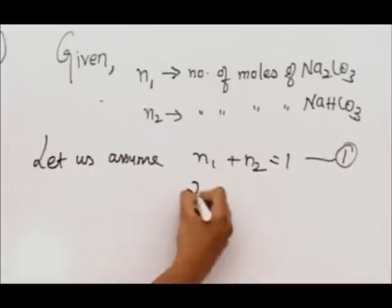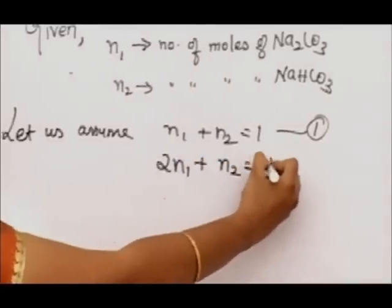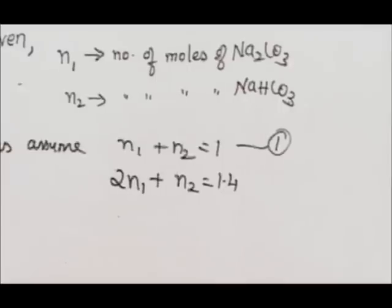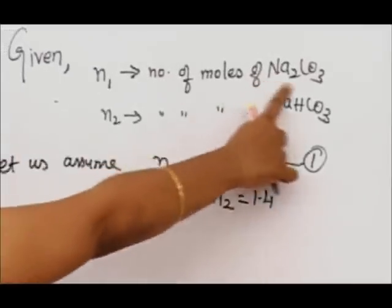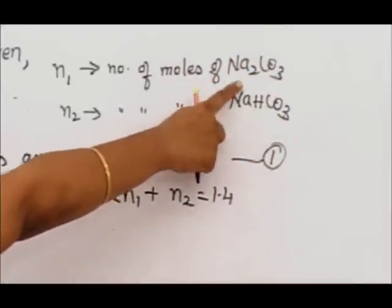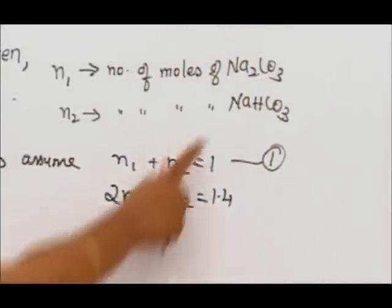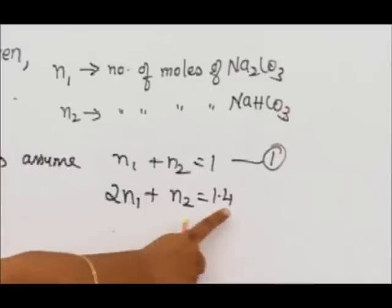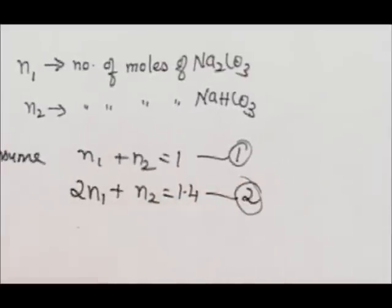The next equation is 2n₁ plus n₂ equals 1.4. For example, if you do the reaction with Na₂CO₃, you will be getting 2NaCl, which is why it is 2n₁. Since NaHCO₃ has only one Na, only one NaCl will be formed. So 2n₁ plus n₂ equals 1.4. Why 1.4? It is the moles of NaCl.